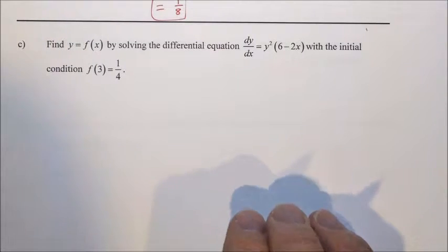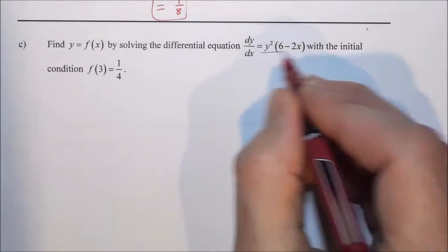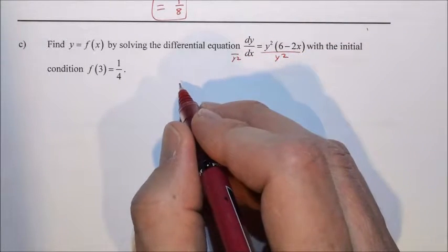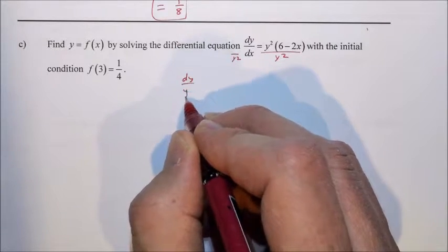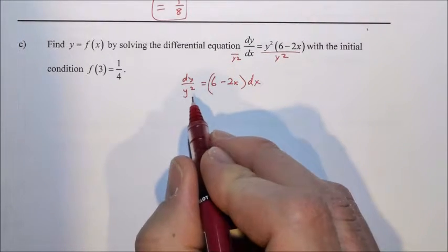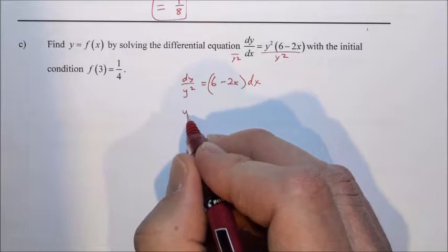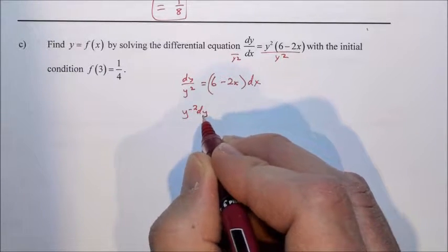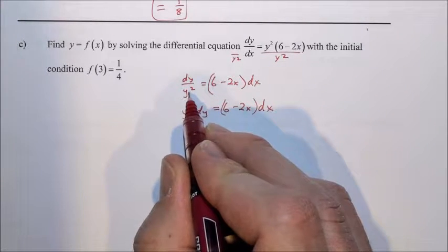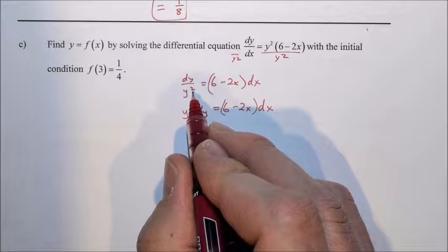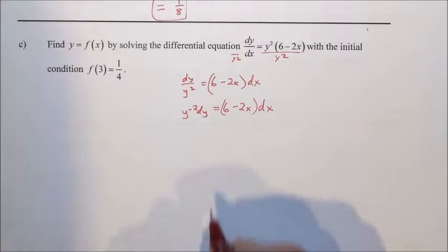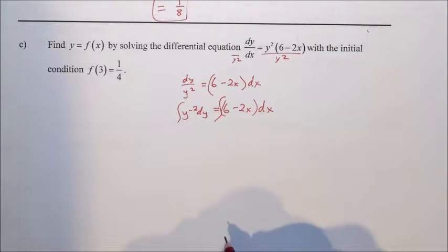Now it's time to solve the differential equation. Let's go through our steps. Step 1, separate the variables. We need to do that by dividing by y squared and multiplying by dx. So we have dy over y squared equals 6 minus 2x in parentheses dx. This is not ready to be anti-derived. We need to change it to y to the negative 2 dy equals 6 minus 2x dx.